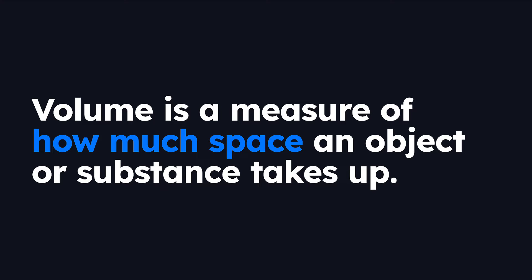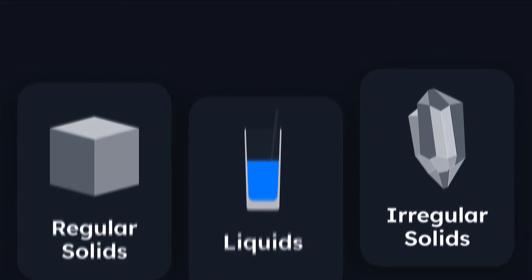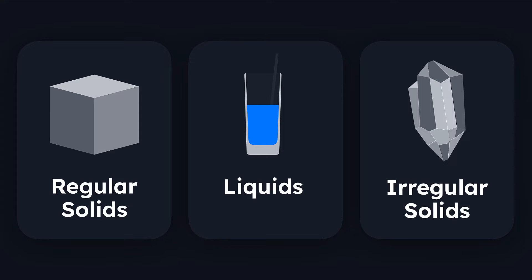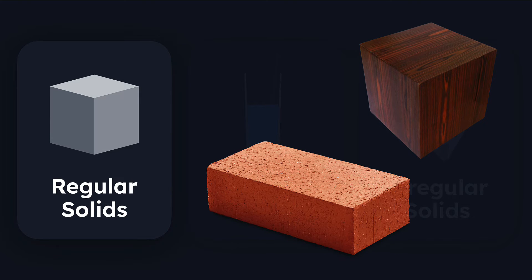In this video, we're going to look at how we can determine the volume of regular solids, liquids, and irregular solids. Let's clarify what we mean by regular solids. We're talking about solid materials like cubes and rectangular prisms where we can easily measure the length, width, and height and use a formula to calculate the volume of the object.